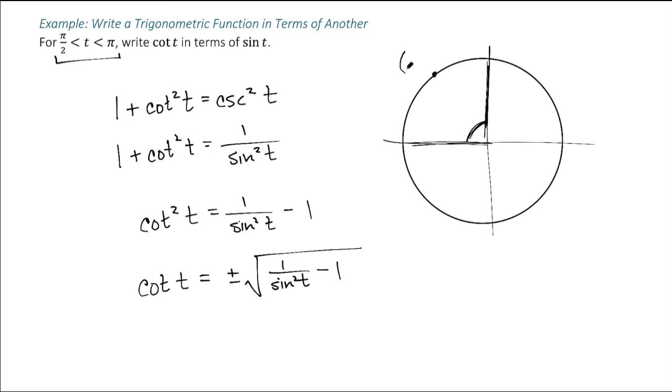And cotangent is the x-coordinate divided by the y-coordinate. Well, the x-coordinate will be negative and the y-coordinate will be positive. So the cotangent will be a negative divided by a positive, which is negative. So for this quadrant, the cotangent of t will be the negative square root of 1 over sine squared of t minus 1.